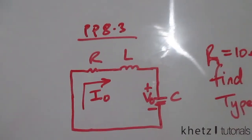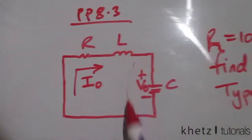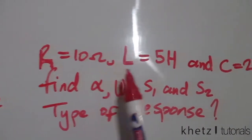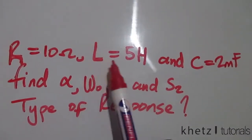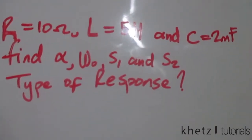Given this source-free RLC circuit, we have the component values: R is 10 ohms, L (the inductor) is 5 henries, and C (the capacitor) is 2 millifarads.